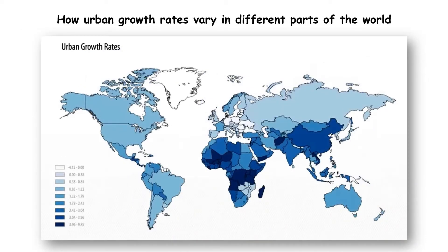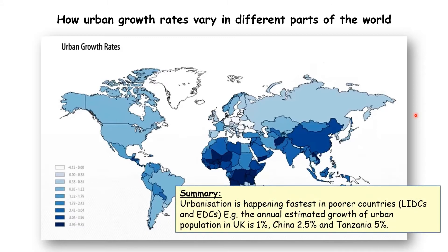This map shows how urban growth rates vary around the world — where towns and cities are growing the quickest. This is the opposite to the previous map, because it's countries of Southeast Asia and Central and sub-Saharan Africa that have the quickest growth rates. Urbanisation is happening fastest in the LIDCs and EDCs. The UK's towns and cities grow at 1% per year, China at 2.5% per year, and Tanzania has an urban growth rate of 5% per year.